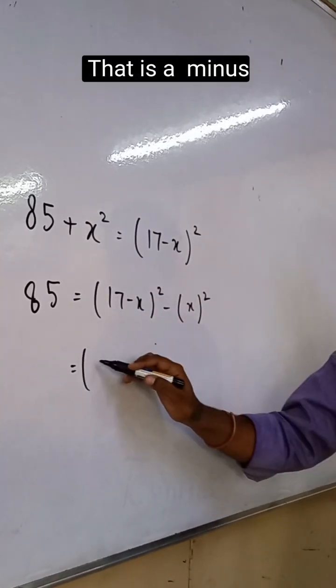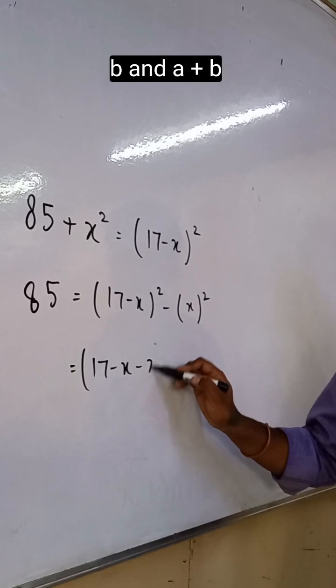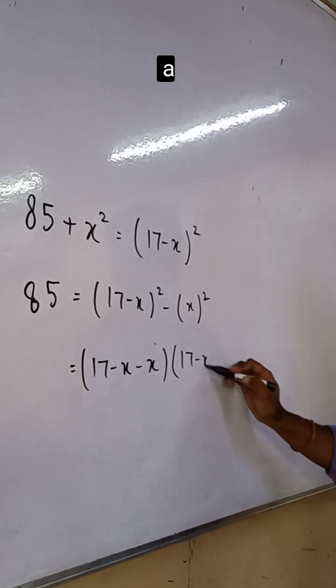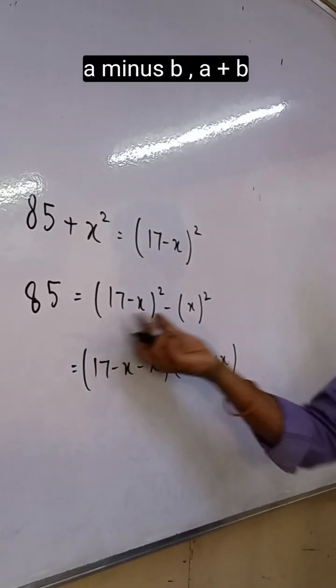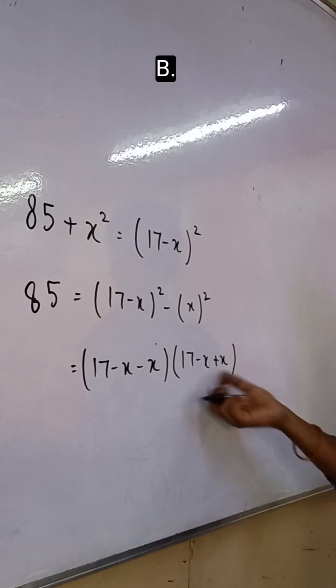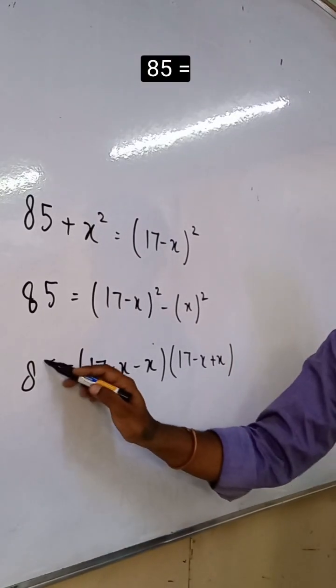a square minus b square. That is a minus b and a plus b. So this is 85.